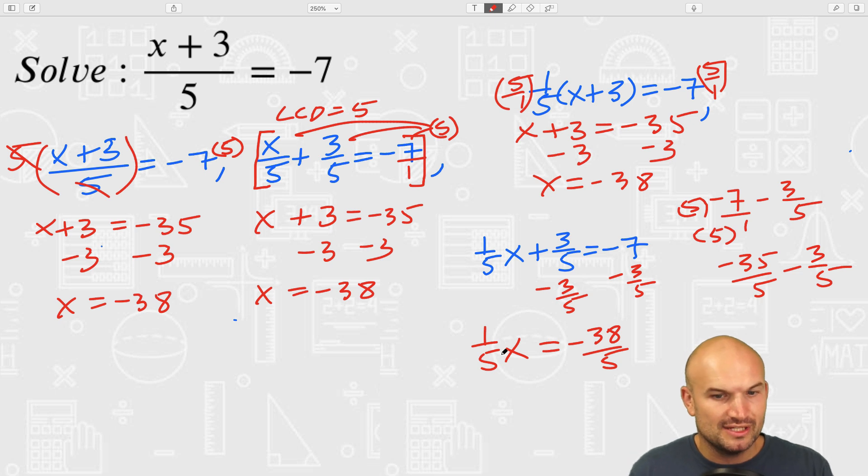So we have one-fifth x equals negative 38 fifths. And again, kind of the same thing, my x is being multiplied by one-fifth, so you could divide by one-fifth if you wanted to, or you could also just multiply by the reciprocal, because dividing by one-fifth is really the same thing as multiplying by the reciprocal. And therefore you get x equals negative 38.